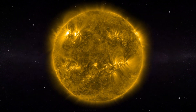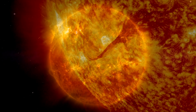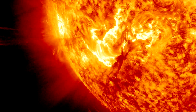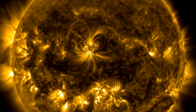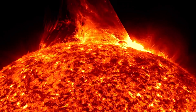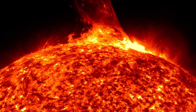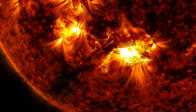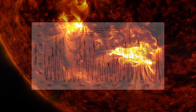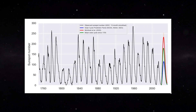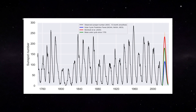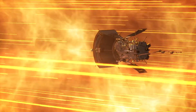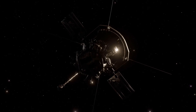Today, Wolfe's sunspot counts continue since no other index of the sun's activity reaches into the past as far and as continuously. Wolfe confirmed the existence of a solar cycle in sunspot numbers and more accurately determined the cycle's length to be 11.1 years using early historical records. Today, much more sophisticated measurements of solar activity are made routinely, but none has the link with the past that sunspot numbers have.